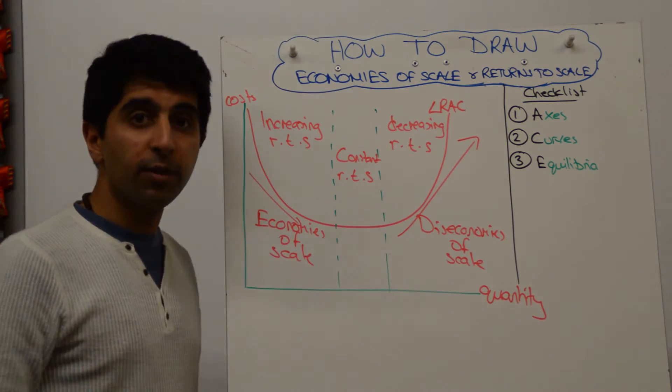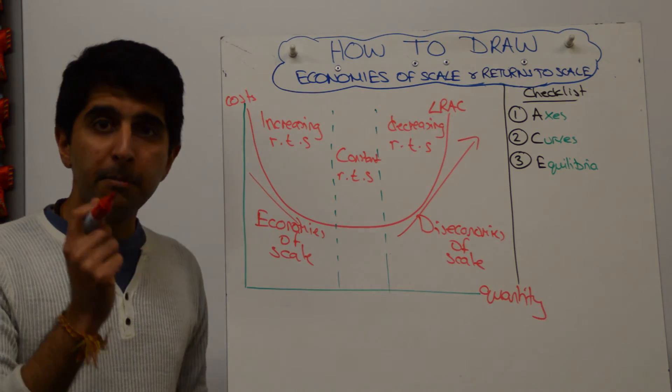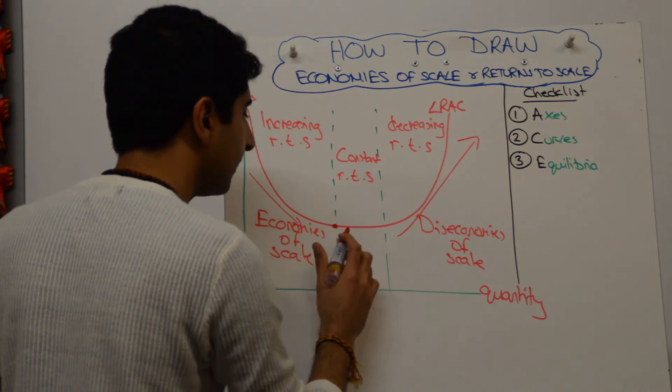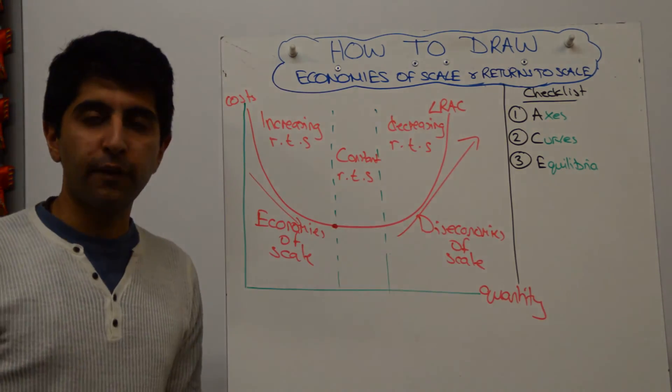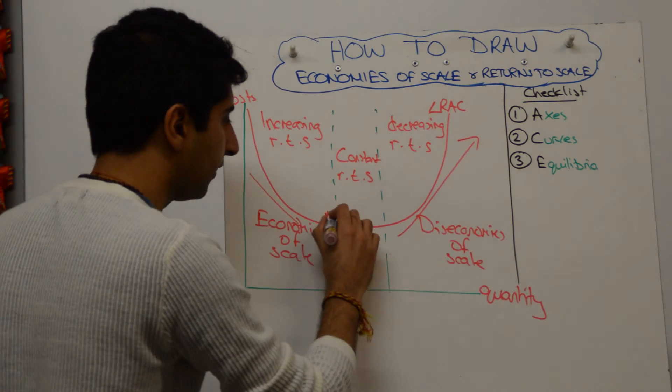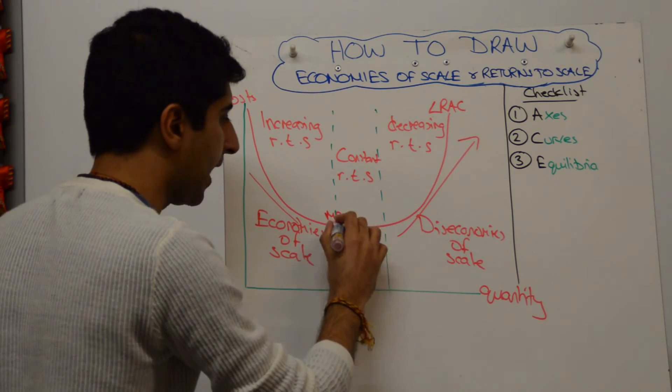What's worth putting on this diagram is the minimum efficient scale of production. That occurs as soon as the long-run average cost curve stops decreasing. We can label that Q1, and that is our MES point.